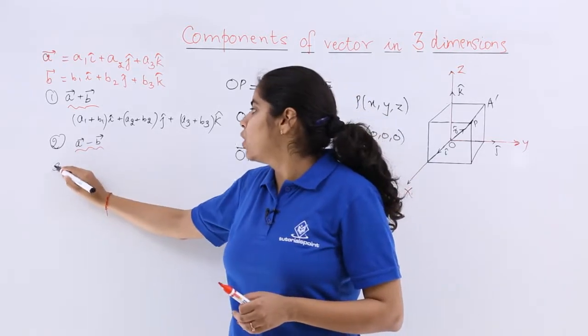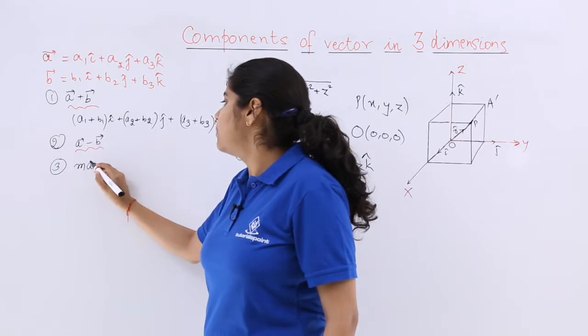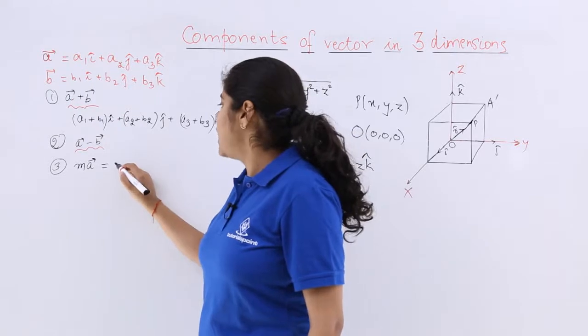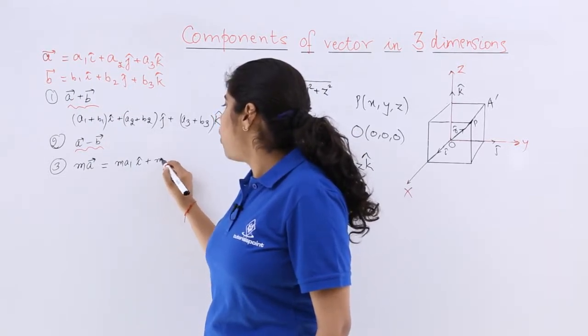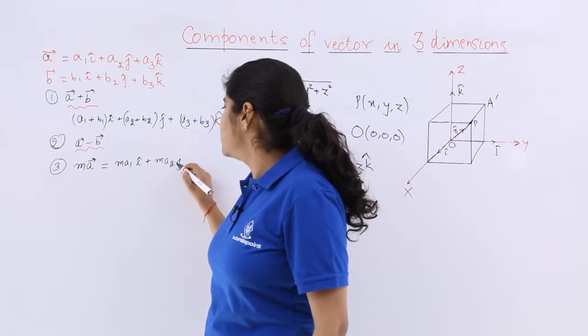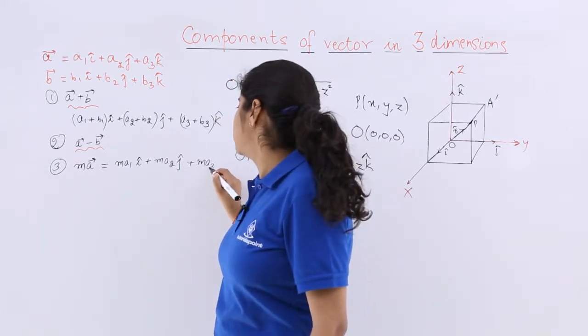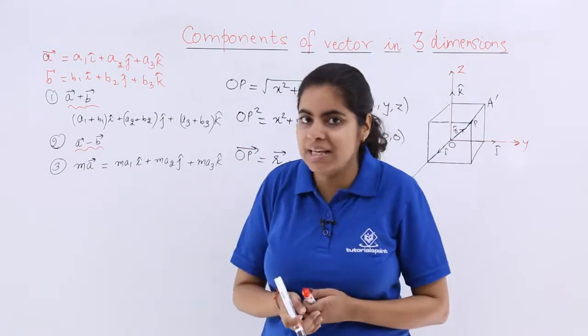The third check is if I have a scalar m and I multiply it with vector a, what will be my result? That means I have to multiply the scalar by all three components. So it is m·a1 i cap plus m·a2 j cap plus m·a3 k cap. Now you understand what we mean by multiplication by a scalar.